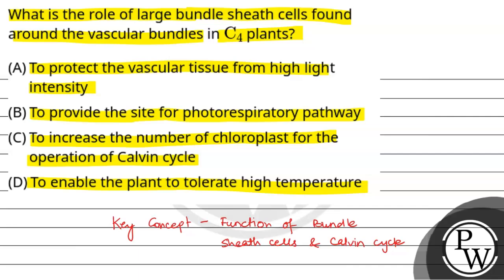So coming back to the question. First option is to protect the vascular tissue from high light intensity. No. Second, to provide the site for photorespiration pathway. No. The main function is to increase the number of chloroplasts for the operation of the Calvin cycle. Yes. And fourth, to enable the plant to tolerate high temperature. This is also wrong.